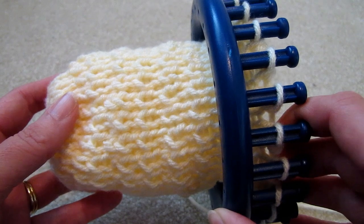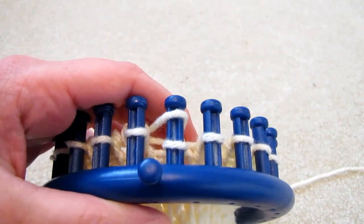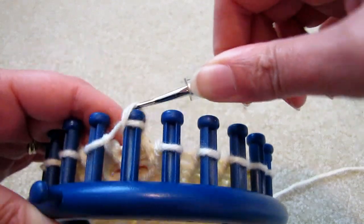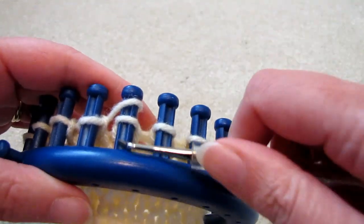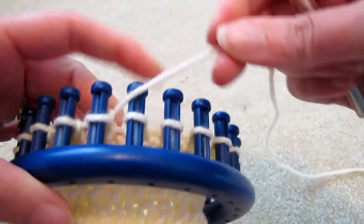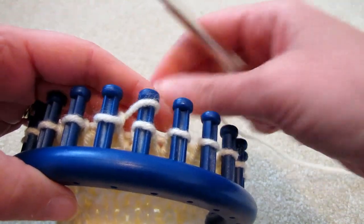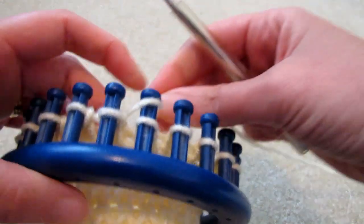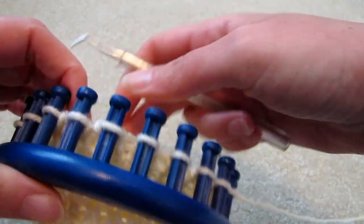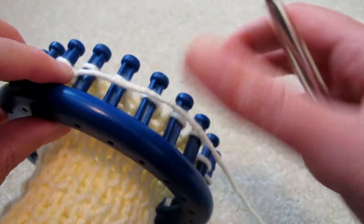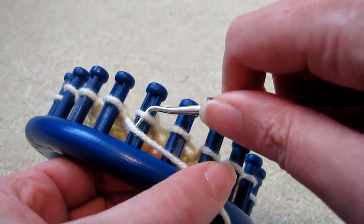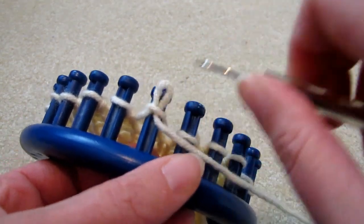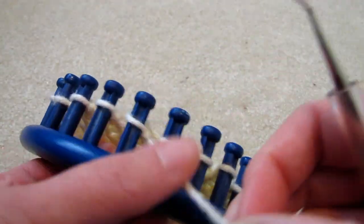Following the pattern first we'll knit seven pegs. One, two, three, four, five, six, and seven. And then we'll purl three. One, two, and three.